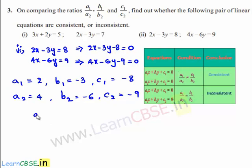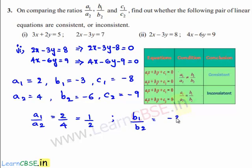Now, the value of a1 by a2 is equal to 2 by 4, which is nothing but 1 by 2. And the value of b1 by b2 is equal to minus 3 divided by minus 6, which is nothing but 1 by 2. If we observe, the values of a1 by a2 and b1 by b2 are both equal to 1 by 2. So, a1 by a2 is equal to b1 by b2.